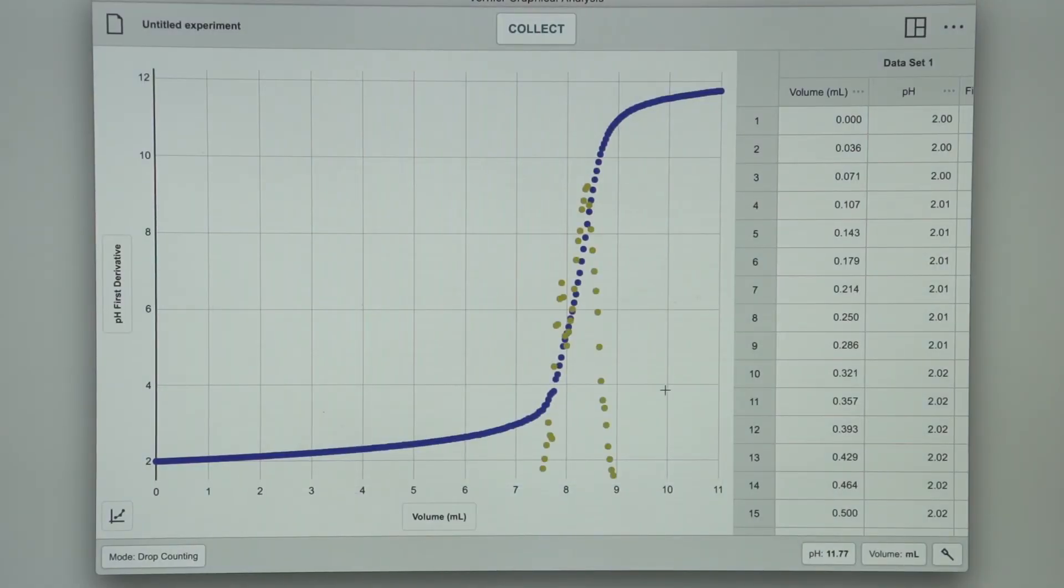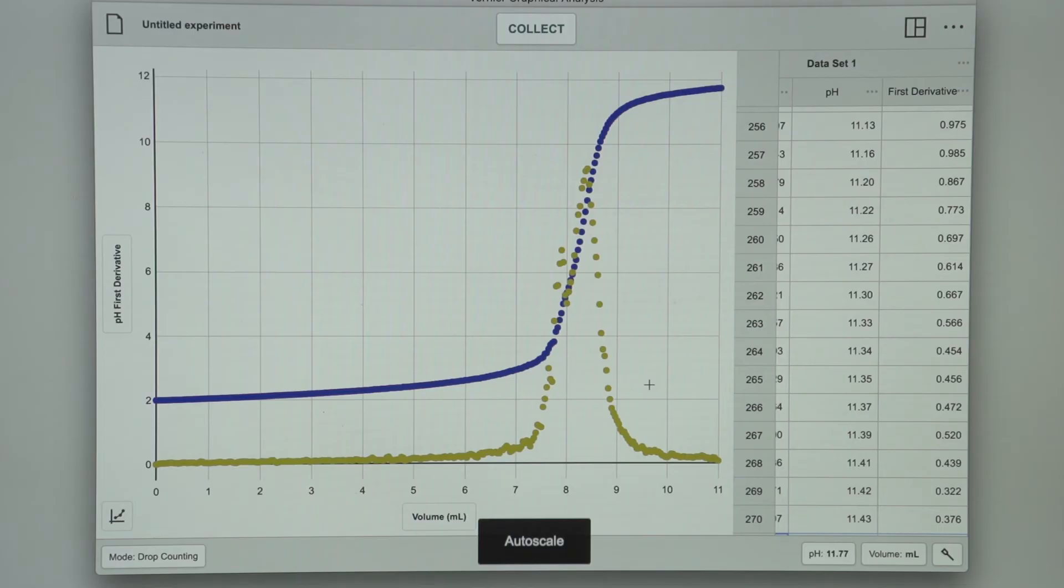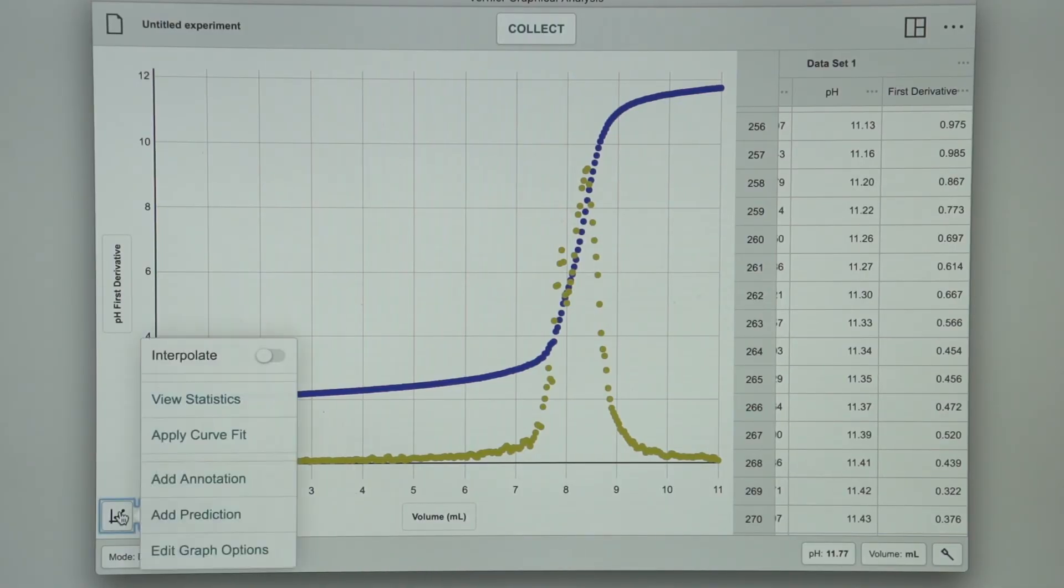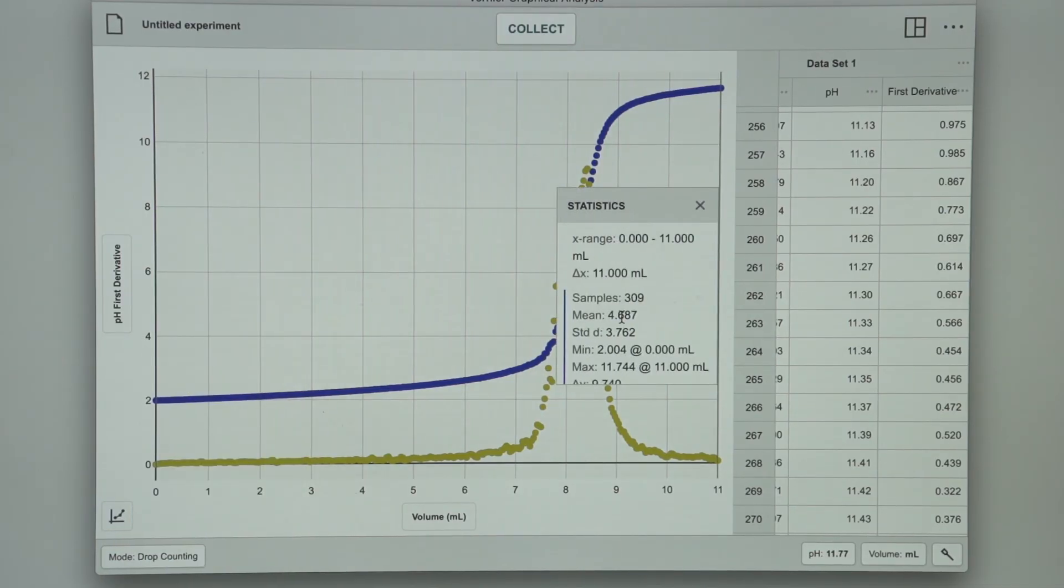To auto-scale, double-click anywhere on the graph. Now, to get the volume where this peak of my first derivative happens, I can use the Statistics feature in Graphical Analysis. To do that, I select the Graph Tools icon, View Statistics, and scroll down to the First Derivative data, where the max is occurring at 8.393 mL.